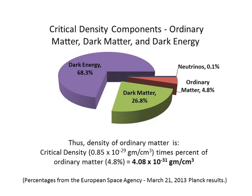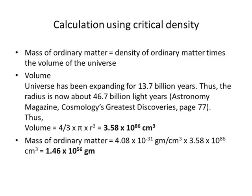This pie chart shows the components of critical density, where the percent is the percent of total energy. For ordinary matter, the percent is 4.8. Thus, the density of ordinary matter is 4.8% times the critical density, or 4.08 times 10 to the minus 31st grams per cubic centimeter. Note that although neutrinos are defined as particles like electrons, they are shown separately because they are so different from ordinary matter. We can calculate the mass of ordinary matter by multiplying the density times the volume of the universe. The universe has been expanding for 13.7 billion years, so the radius is now about 46.7 billion light years, giving a volume of 3.58 times 10 to the 86 cubic centimeters. Thus, the mass of ordinary matter is 1.46 times 10 to the 56 grams.